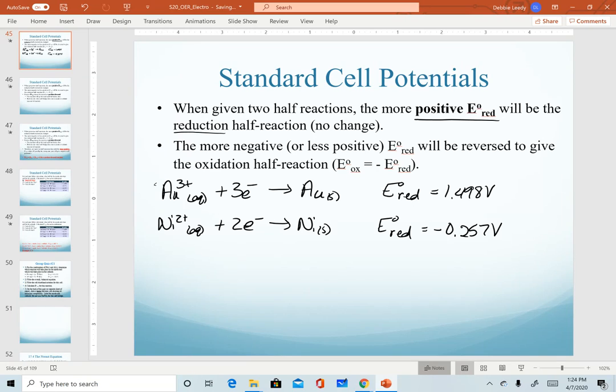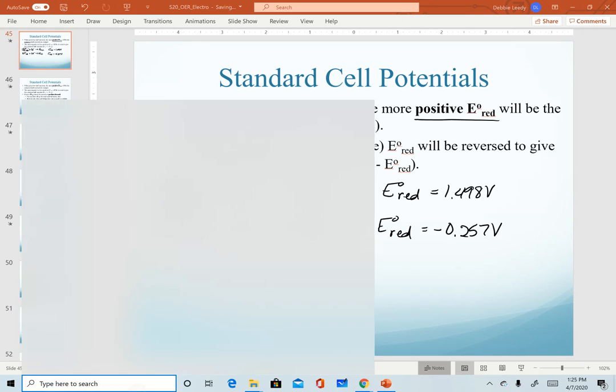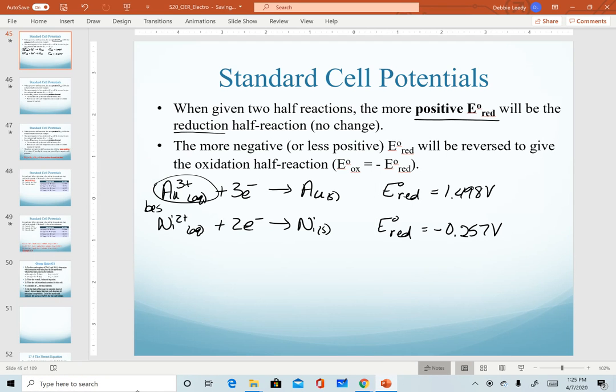We determined that gold ion is the easiest to reduce, therefore the best oxidizing agent.